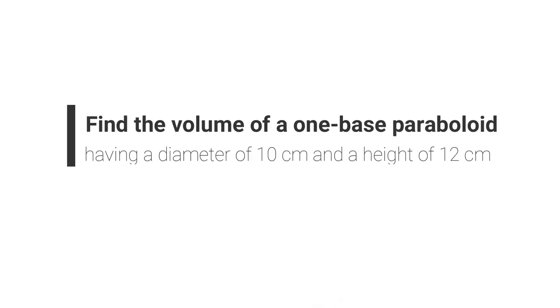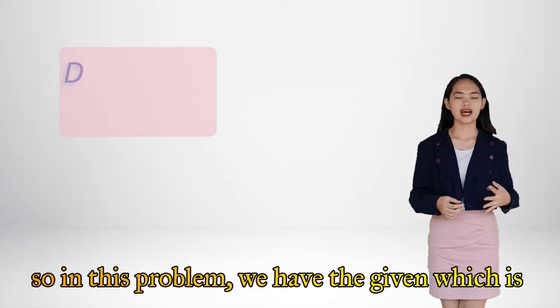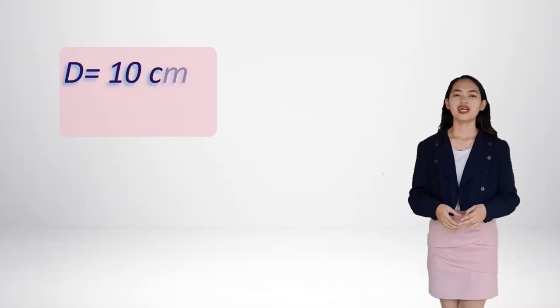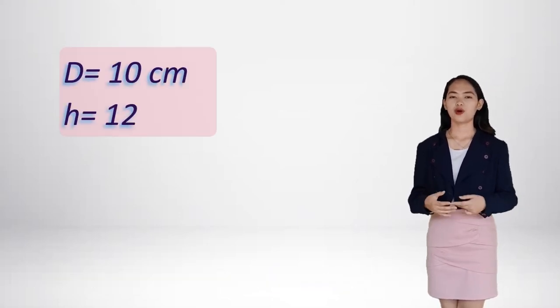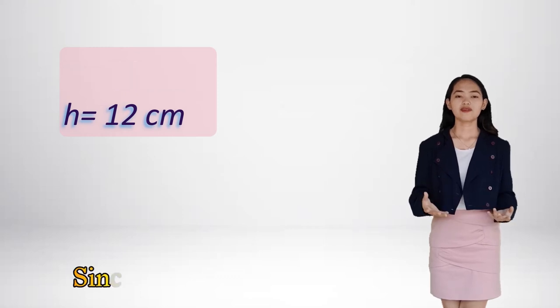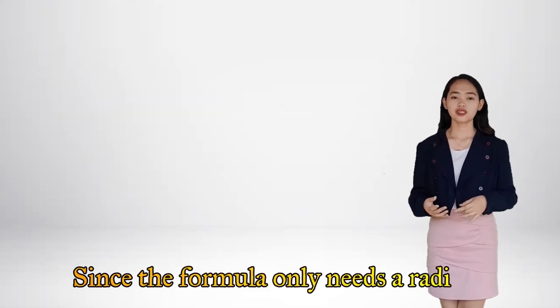Let's say for example, we have to find the volume of a one-base paraboloid having a diameter of 10 cm and a height of 12 cm. So in this problem, we have the given, which is d, the diameter, which is 10 cm and h, the height, which is 12 cm.